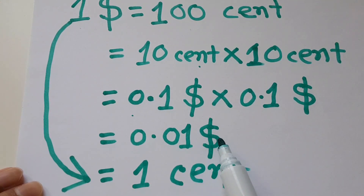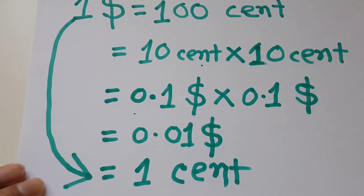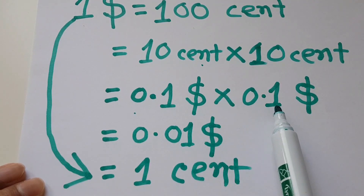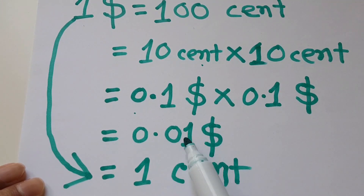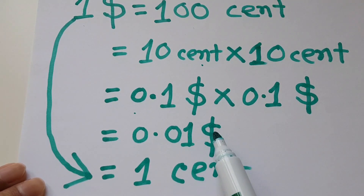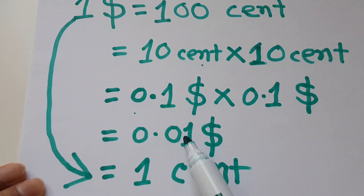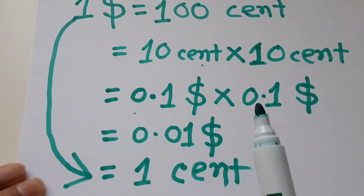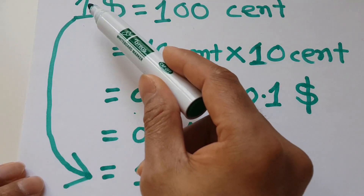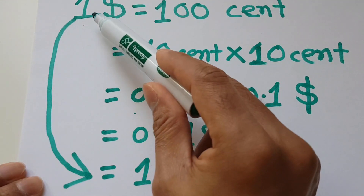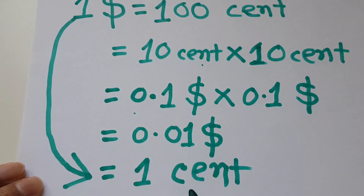The next line is zero point one times zero point one, which equals zero point zero one. I'm keeping the same unit — dollar. You can verify on your calculator: zero point one times zero point one equals zero point zero one dollar. Converting back to cents, zero point zero one dollar equals one cent. So I'm proving that, according to this mathematics, one dollar equals one cent.